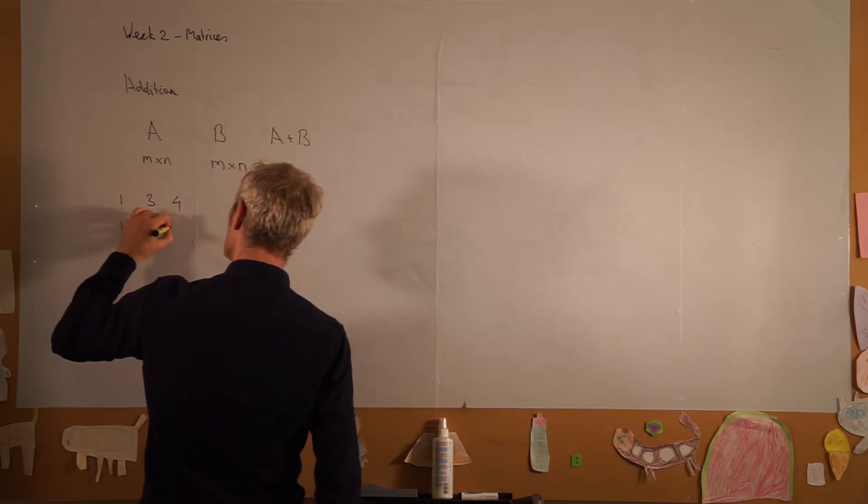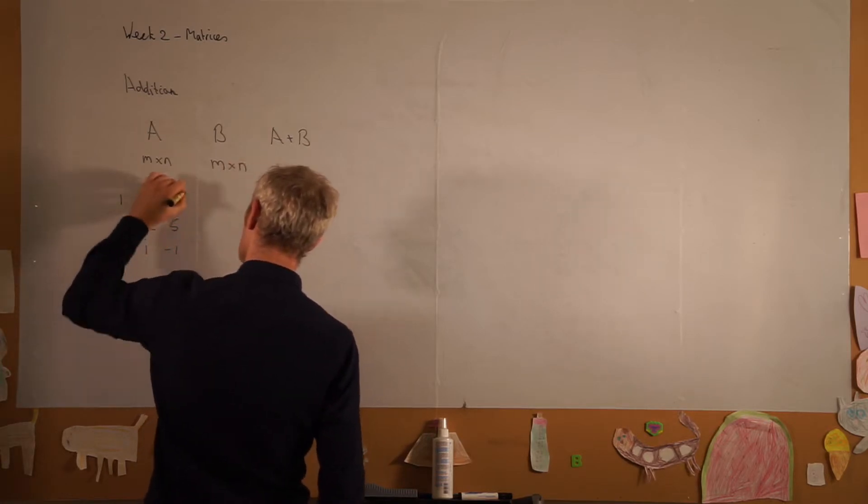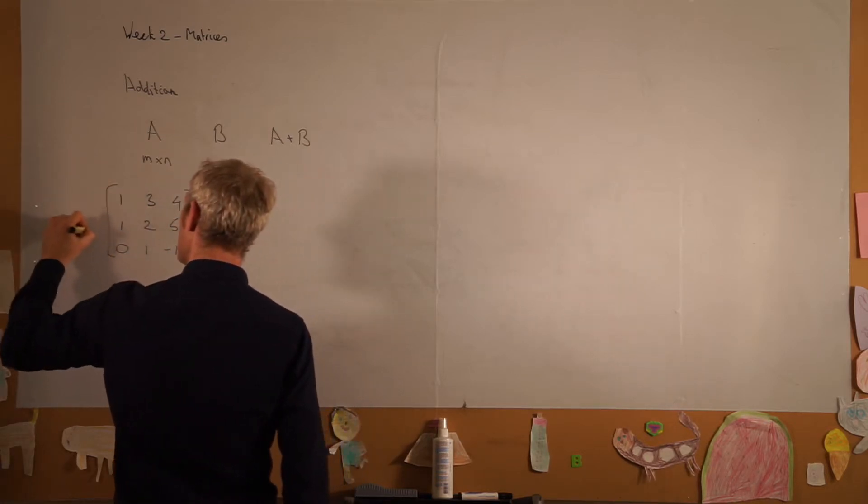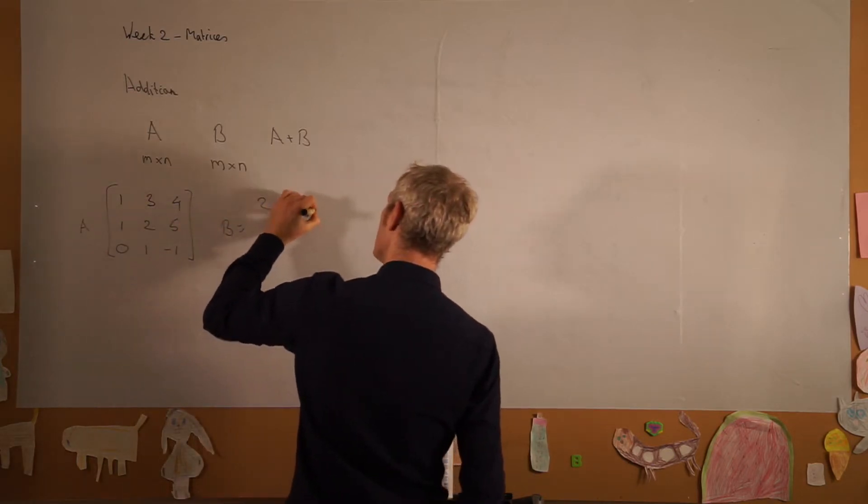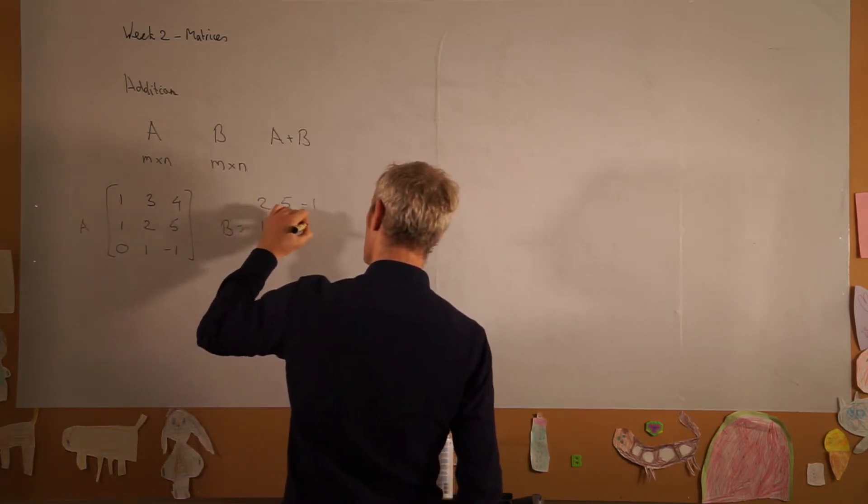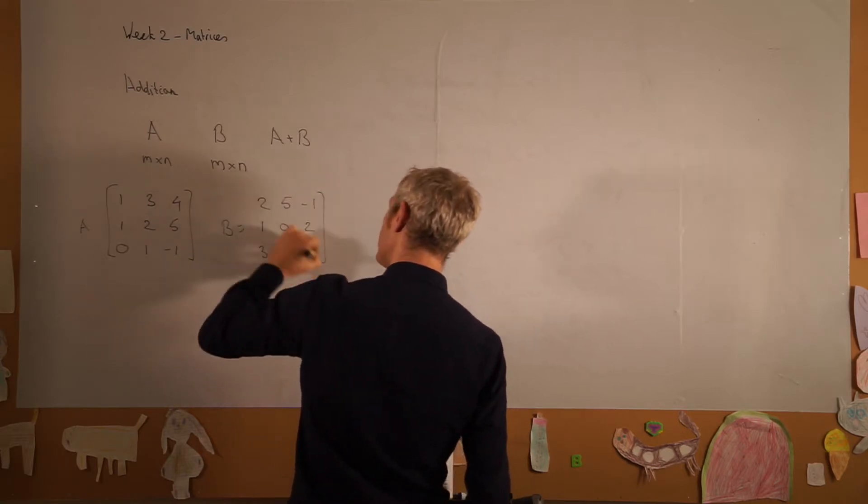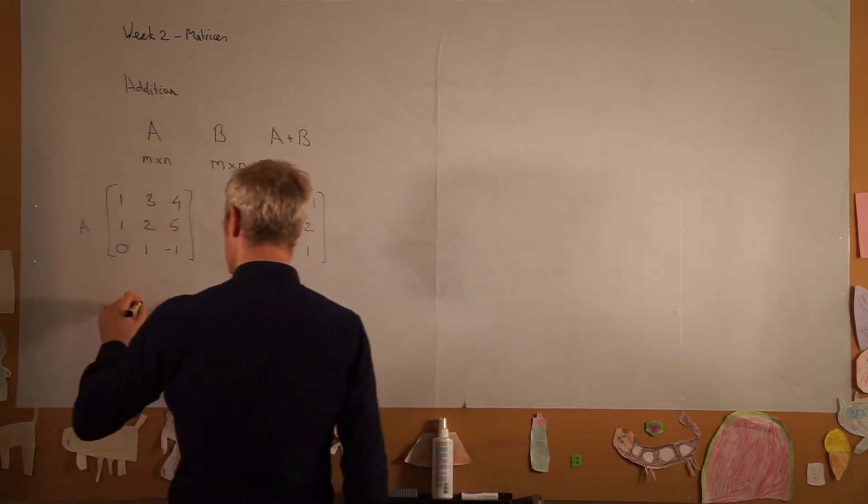So let's look at two matrices: A is 1, 3, 4, 1, 2, 5, 0, 1, -1, and B is equal to 2, 5, -1, 1, 0, 2, 3, 1, 1. A plus B...